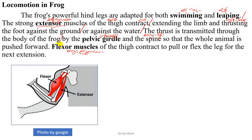The thrust is transmitted through the body of the frog by the pelvic girdle and the spine, so that the whole animal is pushed forward. Flexor muscles of the thigh contract to pull or flex the leg for the next extension.